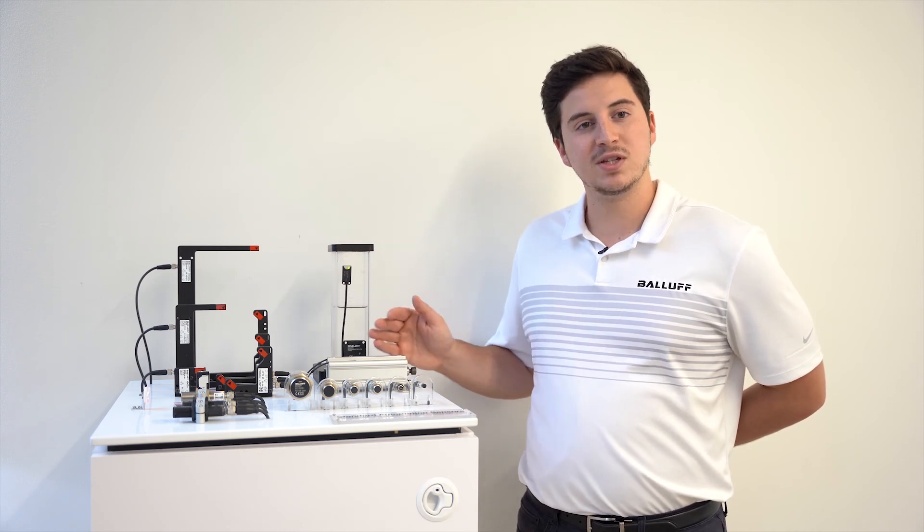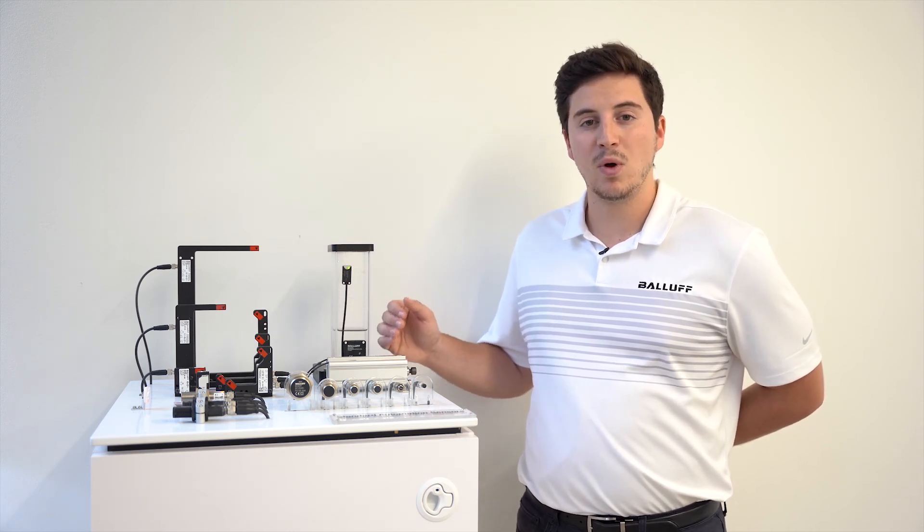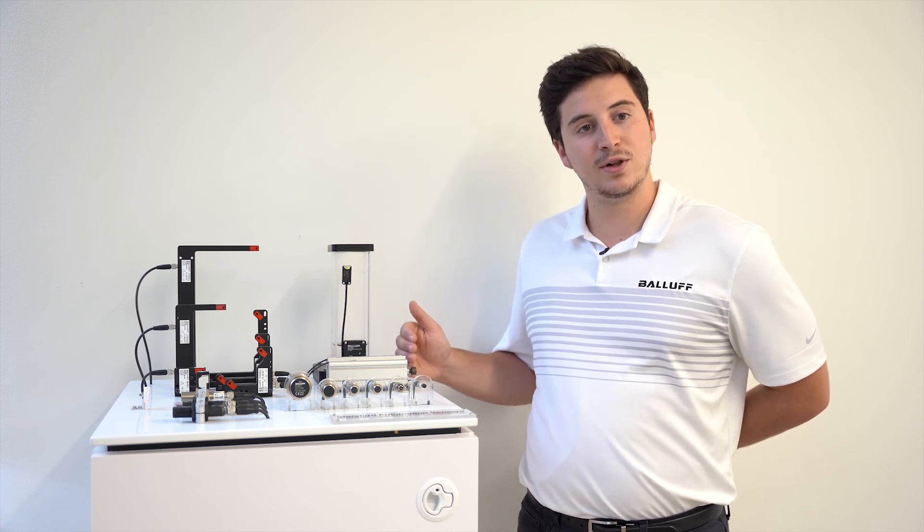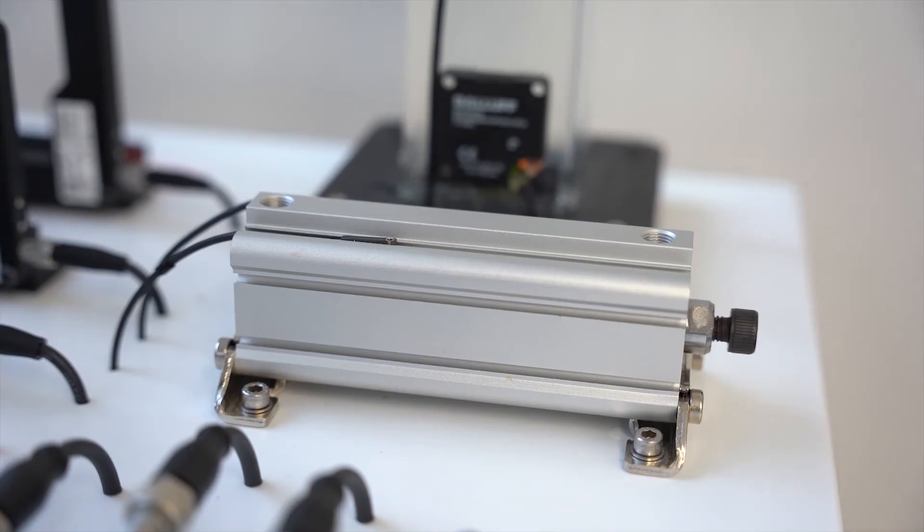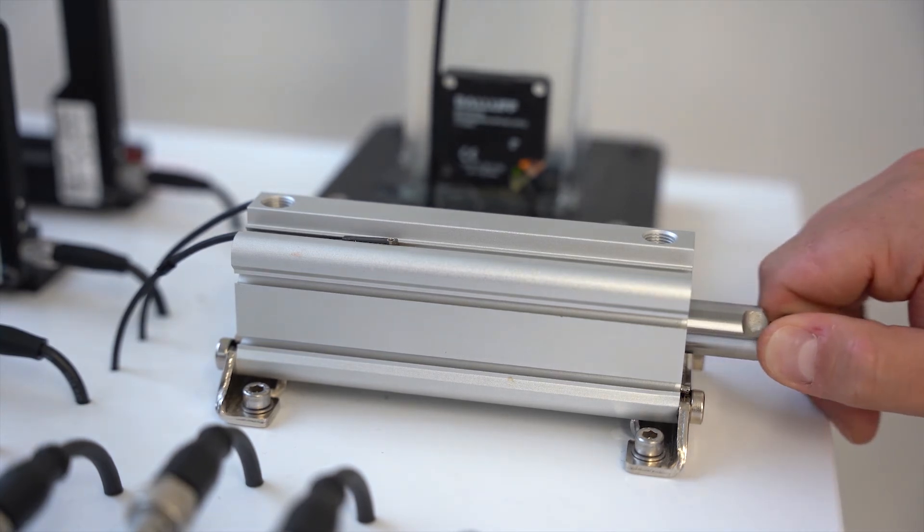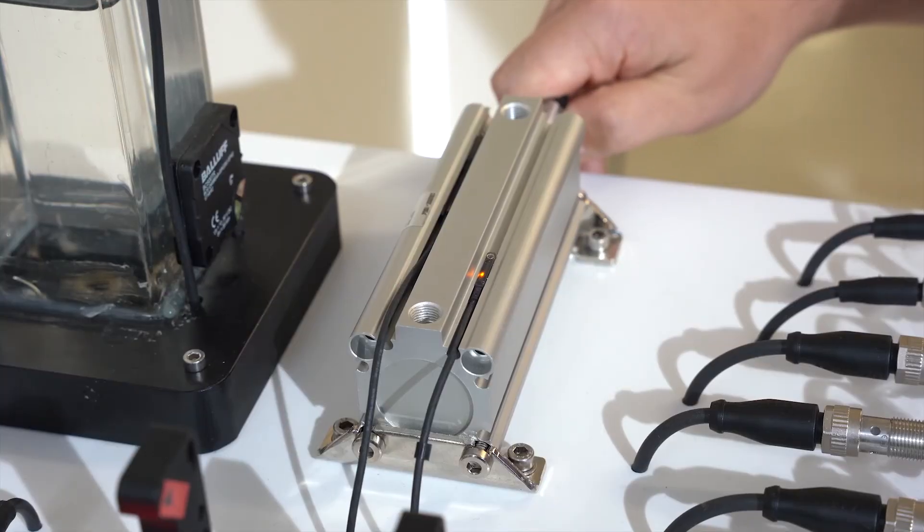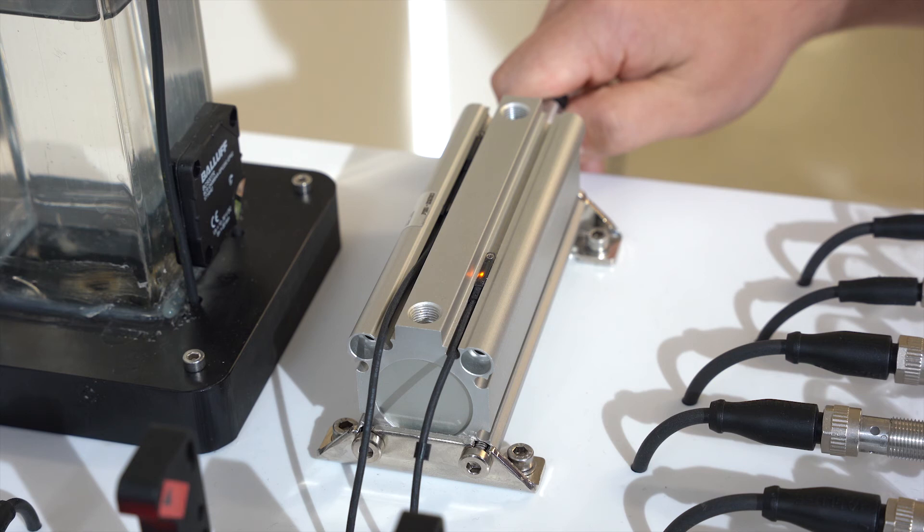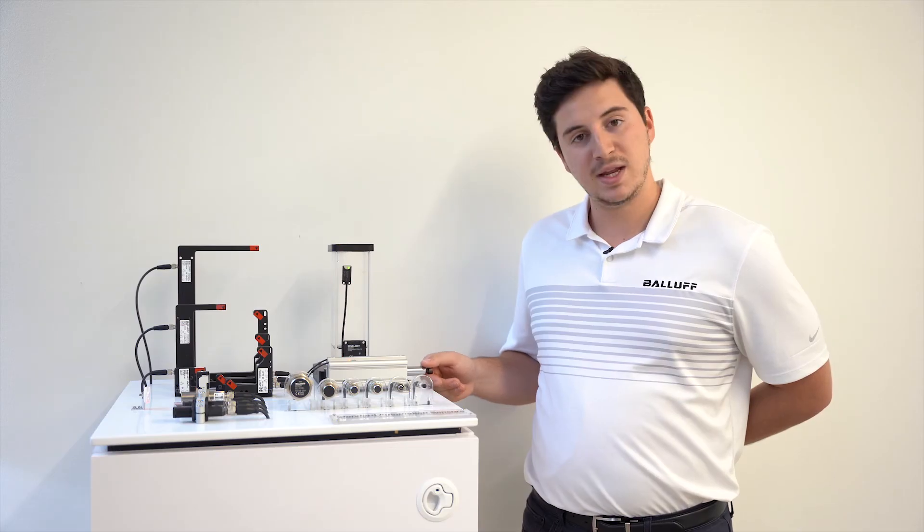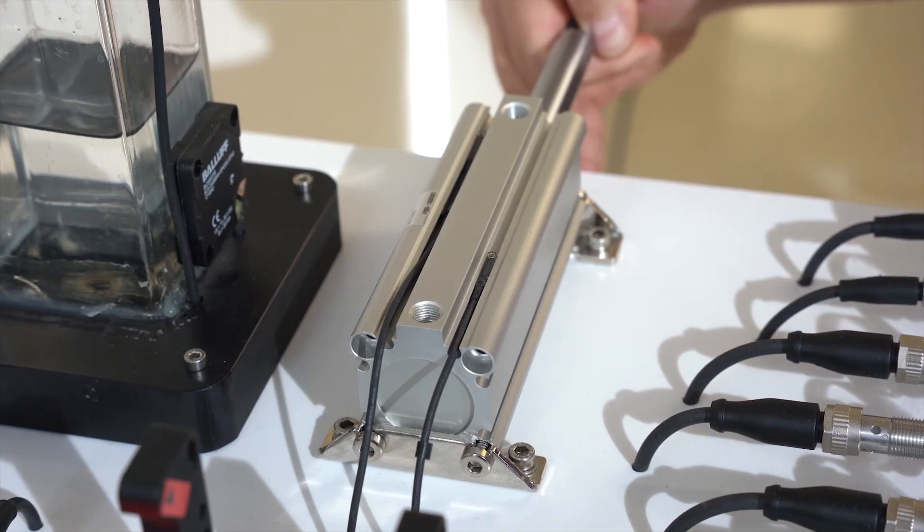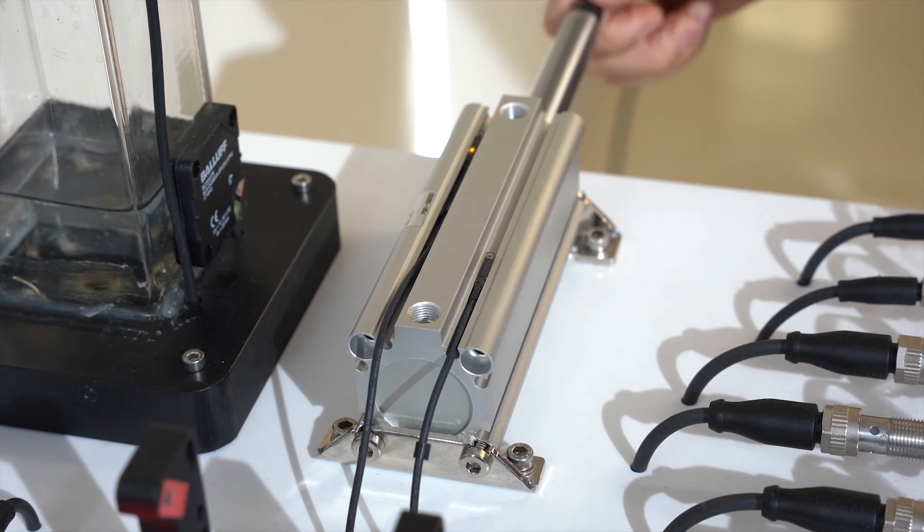Since all C-slot sensors can be inserted from above, they will also fit where the slot ends are closed off from the sides. Ballif's magnetic field sensors feature up to eight teachable switching points. And as you can see when I pull back the piston, it'll trigger that output light on the one switch at the beginning, and then it'll do the same for the second switch at the end.